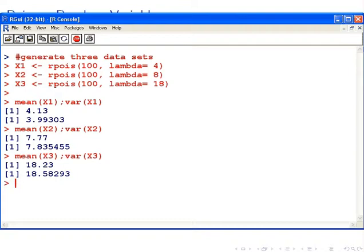So this is our answer here. What happens when we increase lambda? Well, the first value: 4.13, 7.77, 18.23. This indicates that the mean, the center, increases. But let's look at the second value of each output: 3.99, 7.83, and 18.58, and so on. It also shows that the dispersion, the spread, increases.